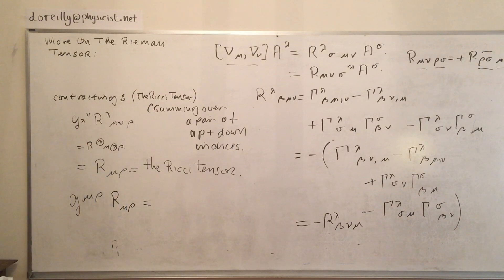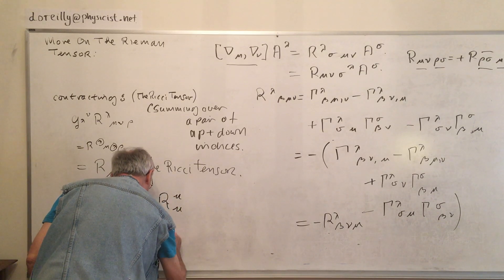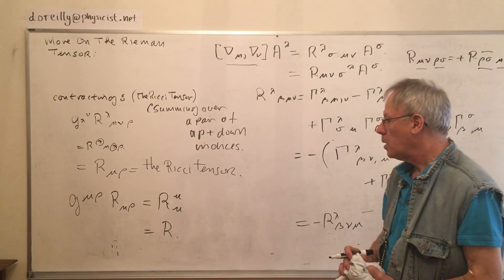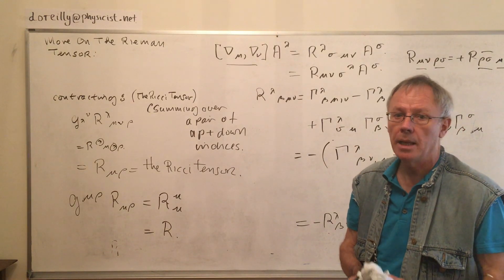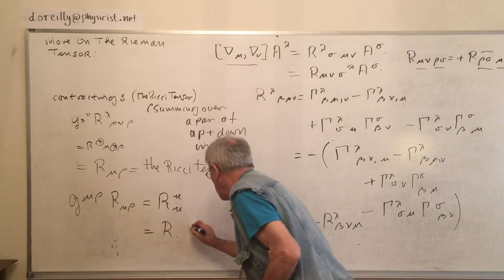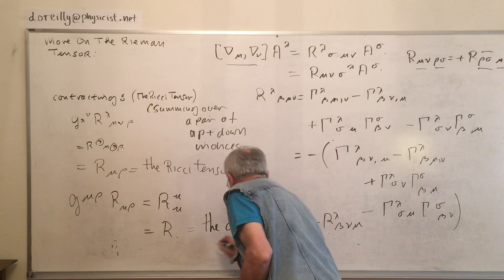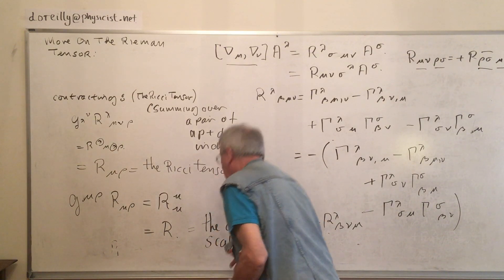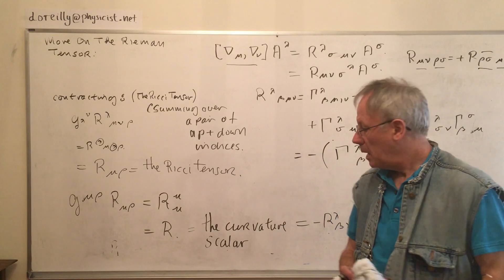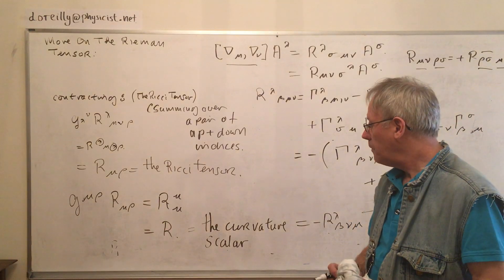Now we can contract over these two indices and we arrive at a scalar. This object is a scalar — it's an invariant under general coordinate transformations, it is just a number. It could be a length, it could be a radius of curvature. R-mu-mu is called the curvature scalar, and it will play many different roles. In one particular role it plays a contribution to the field equations — with matter present, we'll have this.